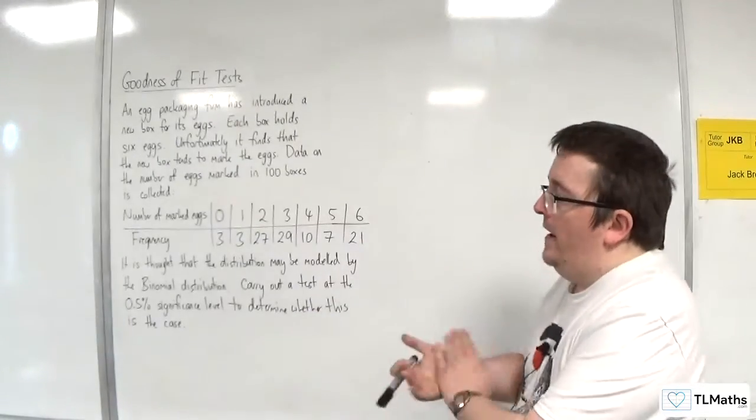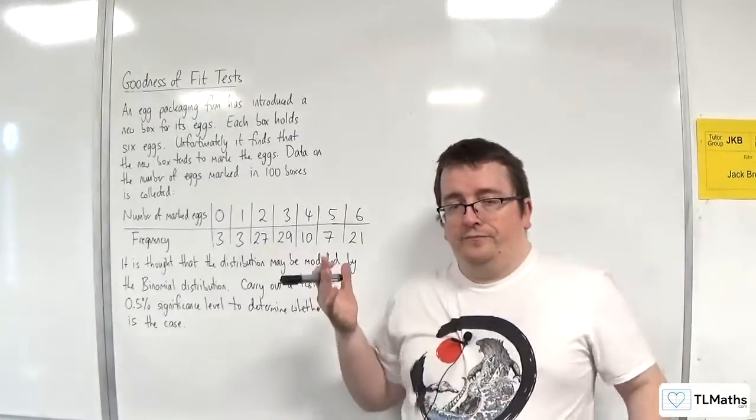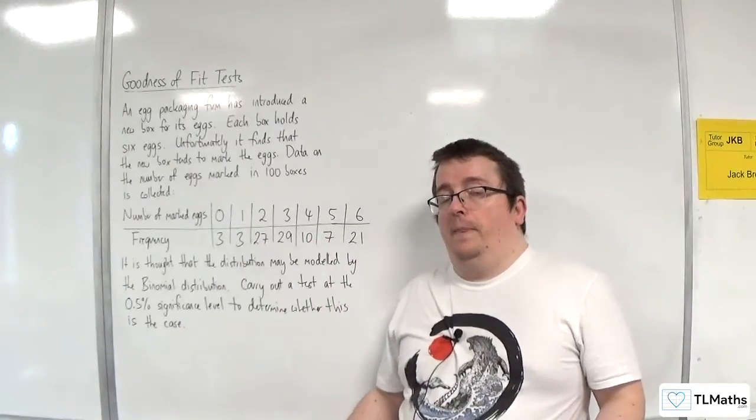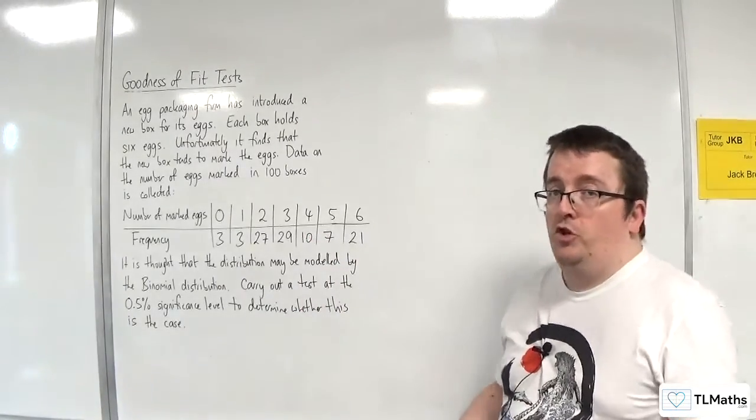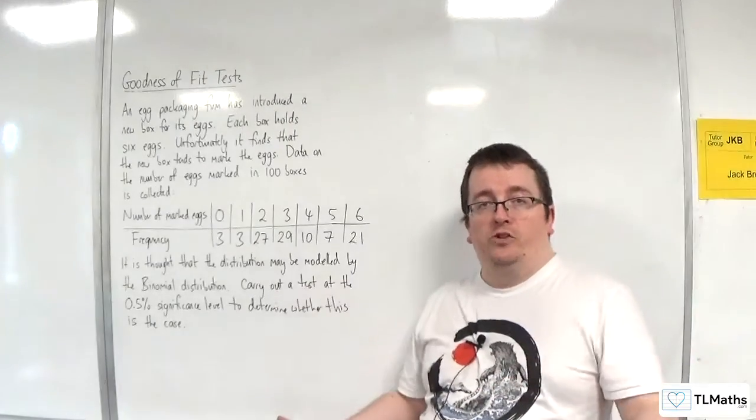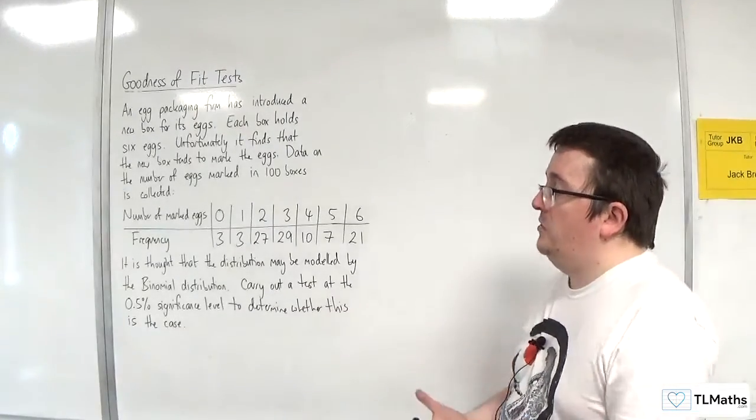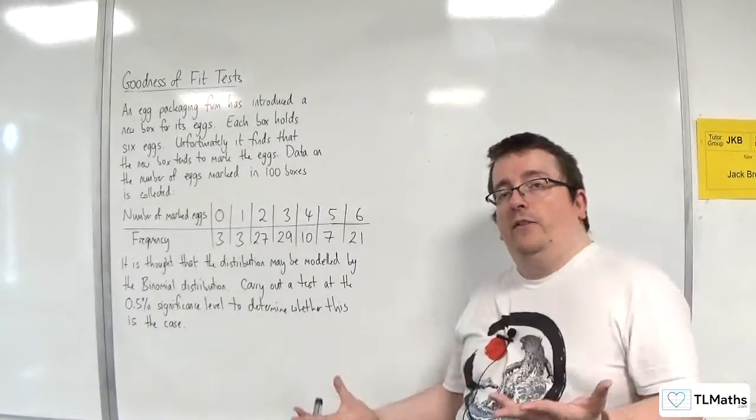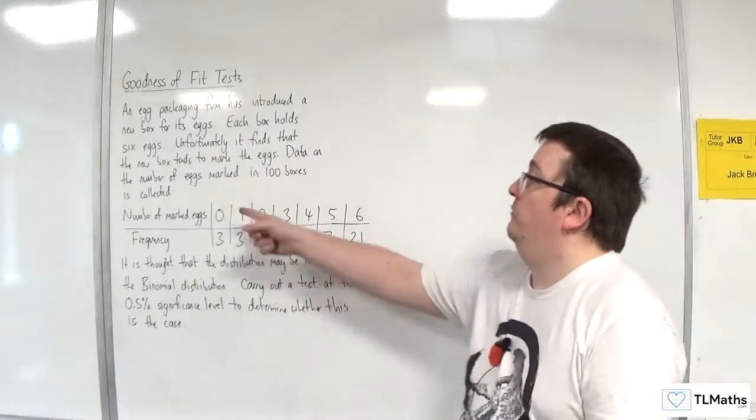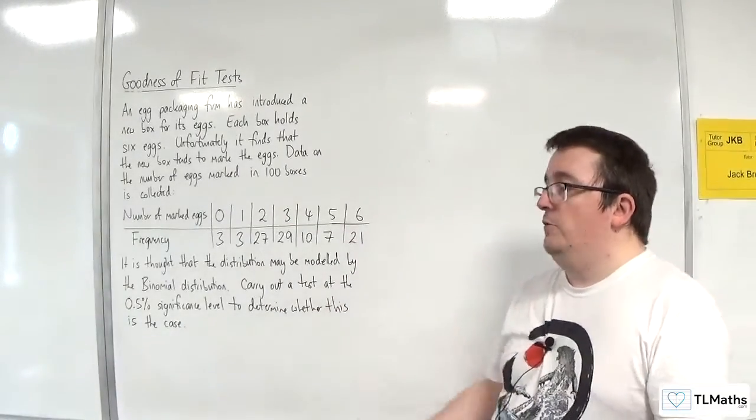Now we're on to the binomial distribution. We still have the same problem that we did with the Poisson distribution in that we don't know one of the parameters. With the Poisson distribution, we didn't know lambda. We could estimate that using the mean. In this case, we don't know the probability p. We know n is 6 because it's going from 0 up to 6, but we don't know p.